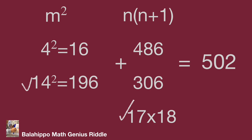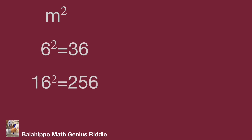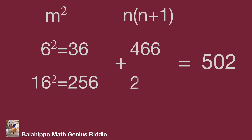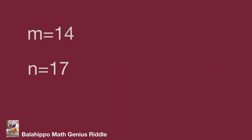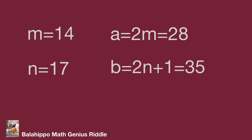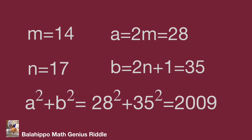So m equals 14 and n equals 17. Checking 6 squared equals 36 and 16 squared equals 256, the remaining values 466 and 246 do not equal n times (n plus 1), so those are not the answer. The only solution is m equals 14 and n equals 17. Therefore a equals 2m equals 28, and b equals 2n plus 1 equals 35. Verification: 28 squared plus 35 squared equals 784 plus 1225 equals 2009. That's the correct answer.